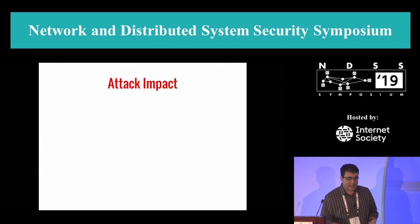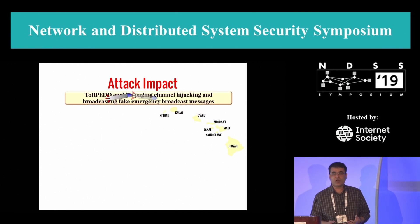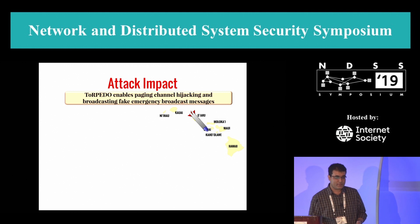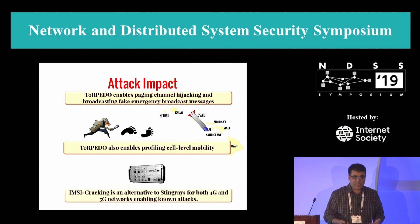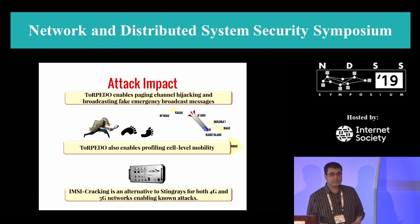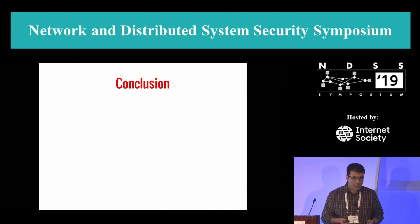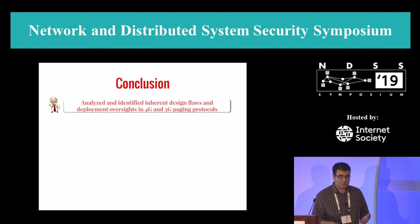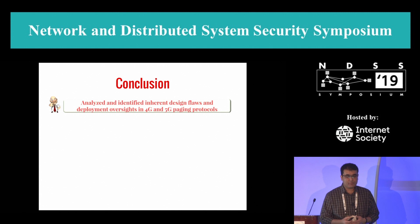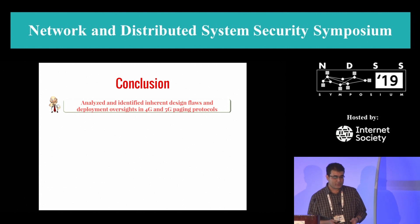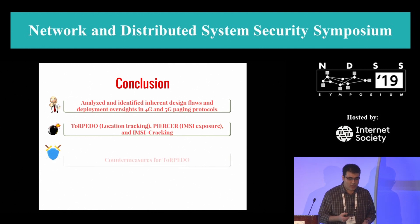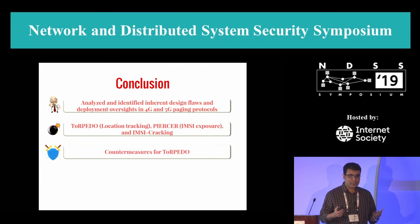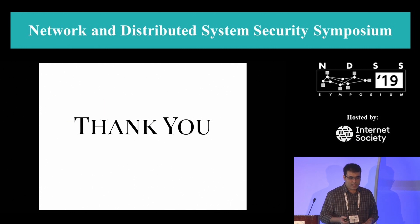Here are the impacts of our attacks. TORPEDO enables paging channel hijacking, broadcasting fake emergency alert messages, and profiling cell-level mobility for users. IMSI cracking is an alternative to stingray attacks for 4G and 5G networks. To summarize, we analyzed and identified design flaws and deployment issues in both 4G and 5G networks, uncovered three new attacks — TORPEDO, PIERCER, and IMSI cracking — and proposed countermeasures evaluated in our paper. Thank you for your attention, and I'll be happy to take any questions.